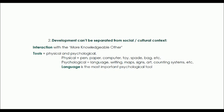Vygotsky identified certain tools used in development. He believed development depends on the interaction between the individual, other people, and the use of tools, and that these cultural tools are passed down through imitative, instructed, or self-regulated learning. Tools are either physical or psychological. Physical tools include objects like pens, paper, computers, and toys. Psychological tools include language, writing, maps, signs, art, and counting systems. To Vygotsky, language was the most important psychological tool, as language acquisition transforms the process of thinking and boosts recognition.